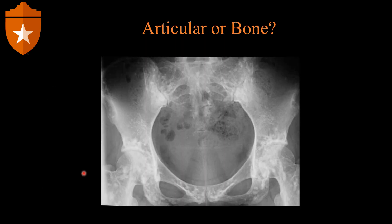Let's look at some examples. We have a pelvis AP view with multiple round sclerotic lesions throughout the pelvic bones, centered around the articulation. These lesions appear to be on both sides of the articulation; however, the articulation appears normal — there is no joint collapse, bone destruction around the articulation, or evidence of radiographic effusion. These are multiple bone islands, also known as osteopoikilosis. Although the multiple lesions are on both sides of the articulation, the articulation is normal, so this is a bone process.